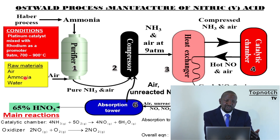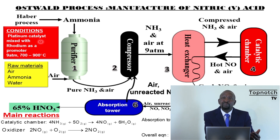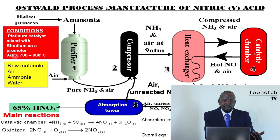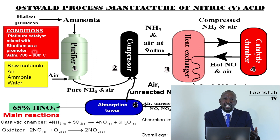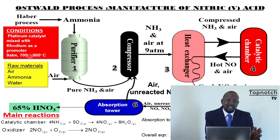What are the optimum conditions that are required here? The optimum conditions are: you require a platinum catalyst, which is mixed with rhodium as a promoter. So many publications will give it as platinum-rhodium, but the catalyst is platinum and rhodium is a promoter. You also require a pressure of 9 atmospheres and a temperature of 700 to 900 degrees Celsius. In an examination, you just have to give a temperature within that range, like 900 degrees Celsius.